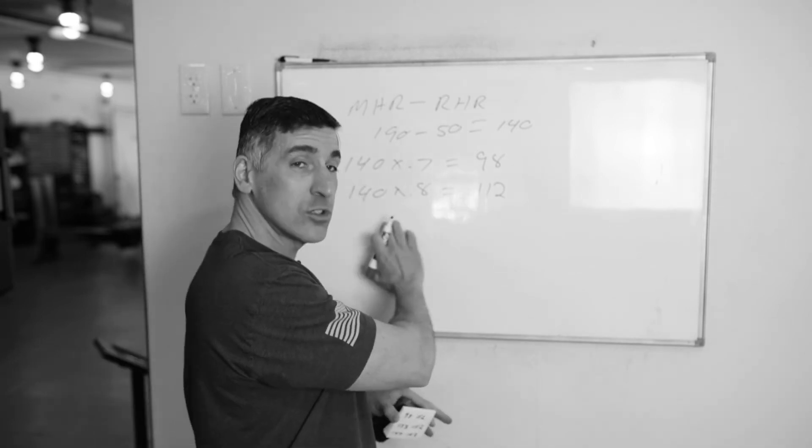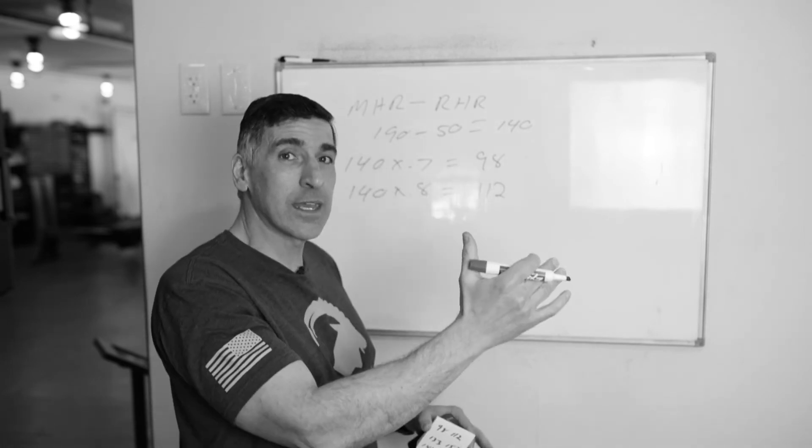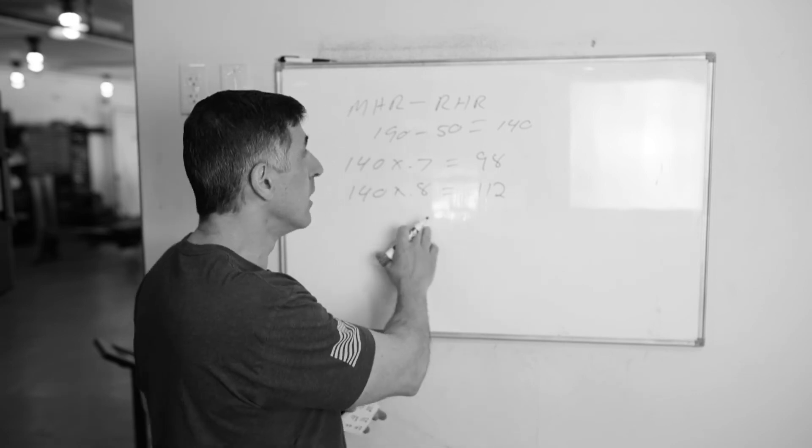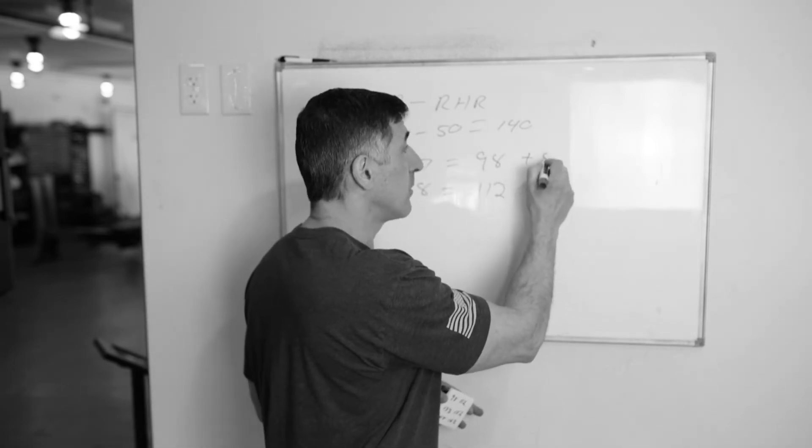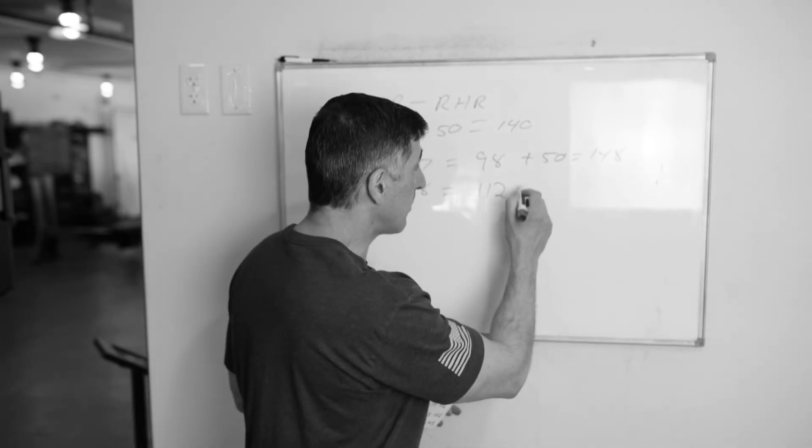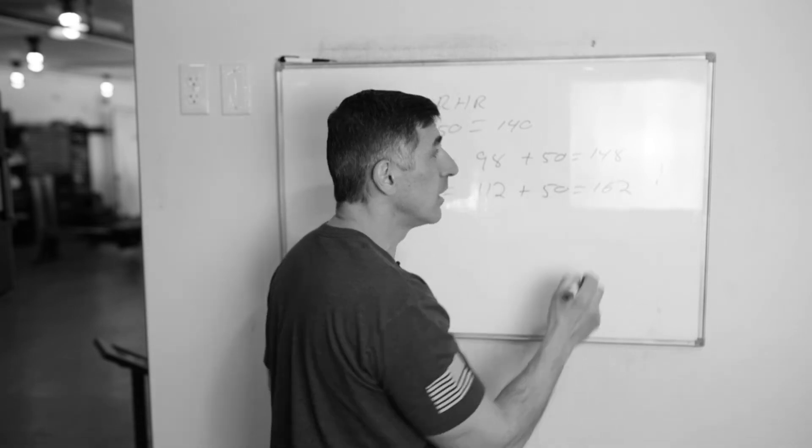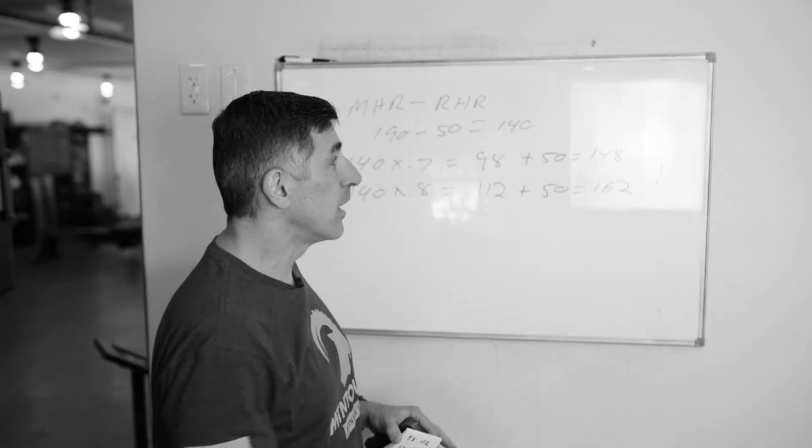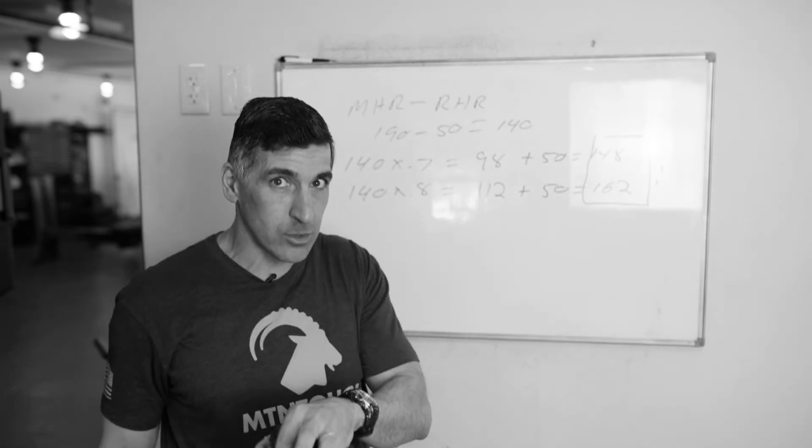Now we add the resting heart rate back in. We took it out. We do our calculations off the amount of heartbeats we actually have, and we add it back in. So if I add it back in, 98 plus my resting heart rate comes back in, it means 148 is really my lower limit. Then I take my 112 plus my resting heart rate and it means 162 is my upper limit. Now this is now my workout range. You may say, why am I doing all this? Let me show you what happens.